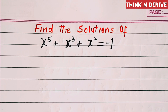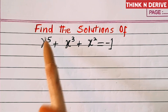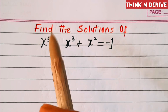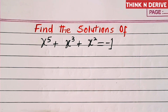Hello everyone, in this video we will solve x⁵ + x³ + x² = -1. If we look at this equation, it has 5 as the highest power, so it will have 5 solutions. Let's find out those solutions.